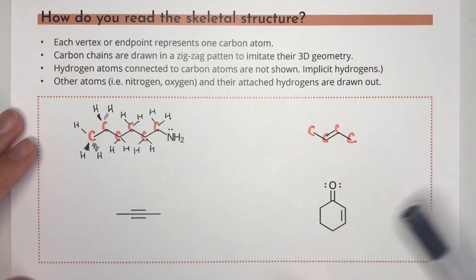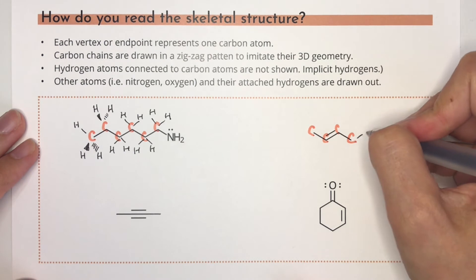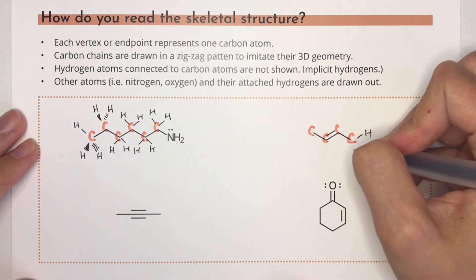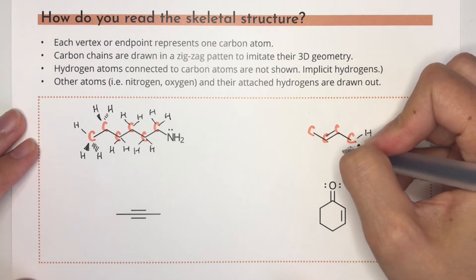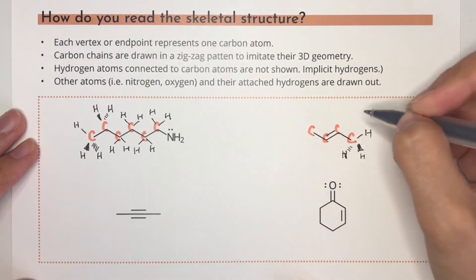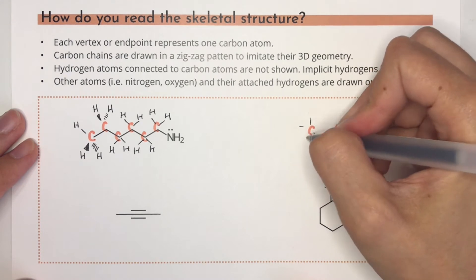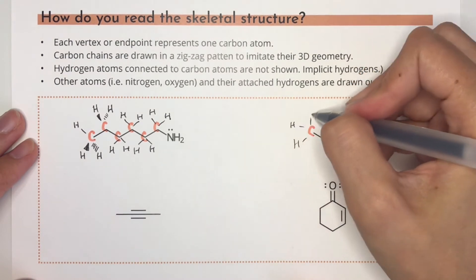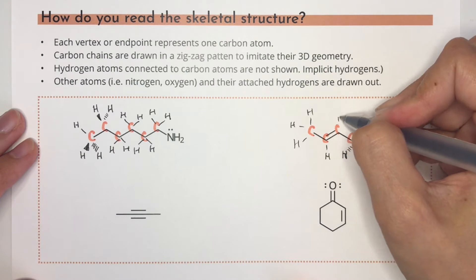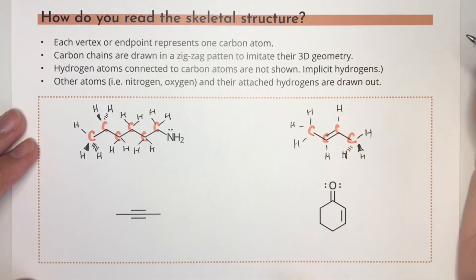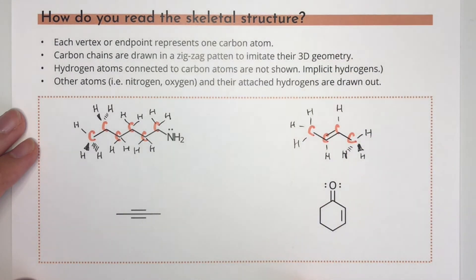We always include the atom labels for atoms that aren't carbon, and we also draw in the hydrogen atoms if they're attached to an atom that isn't carbon. Next, let's look at this alkene. The four points on the line represent four carbon atoms, and we still use the zigzag geometry for double bonds to show the trigonal planar geometry. There are three implicit hydrogens on each of the single-bonded carbons on the ends, and on each of the double-bonded carbons there is only one implicit hydrogen, because each carbon already had three bonds.